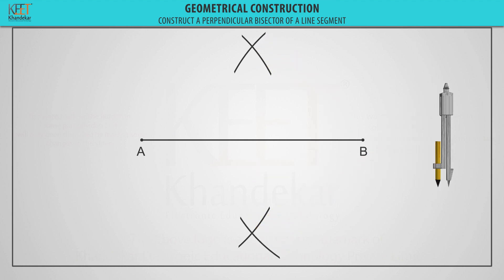Name the arc points as point P and point Q. Draw a line passing through the points P and Q. Thus, the line PQ is the perpendicular bisector of the given line segment.